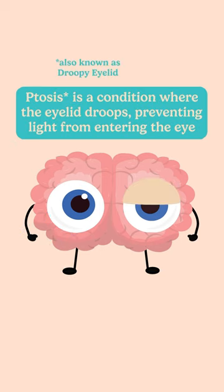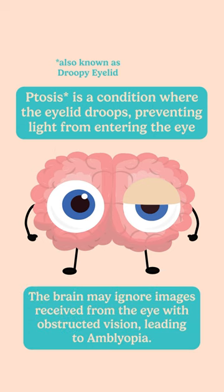And then there's ptosis, a condition where the eyelid drips so low that it prevents light from entering through a clear path. Due to this, the brain may ignore images received from the affected eye, which can lead to amblyopia.